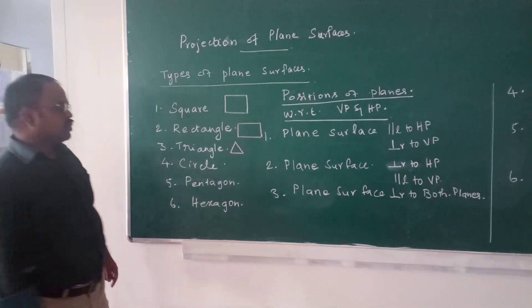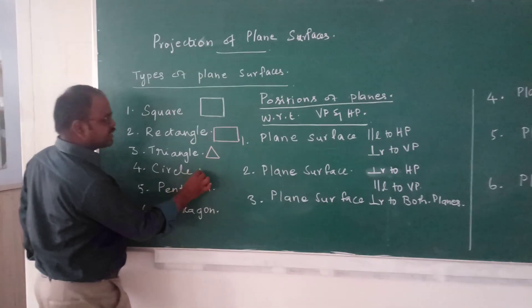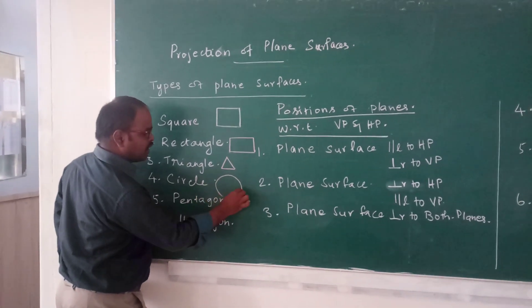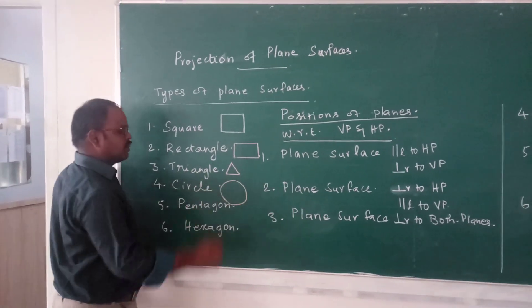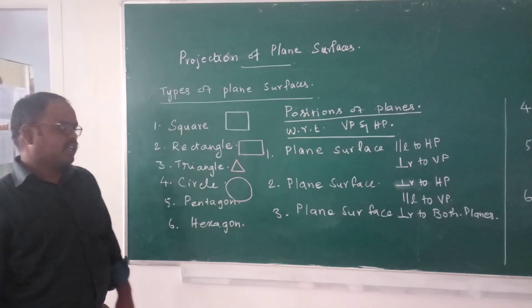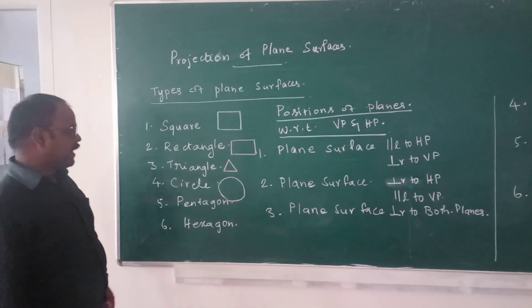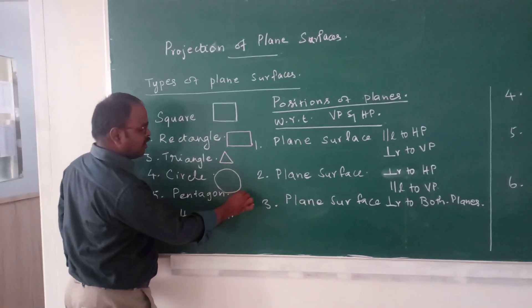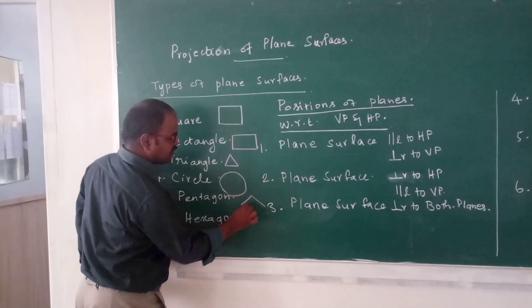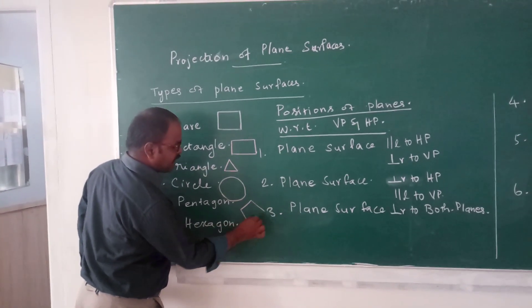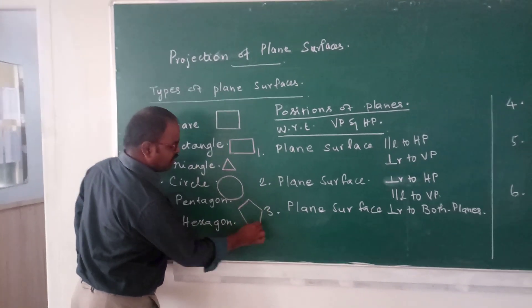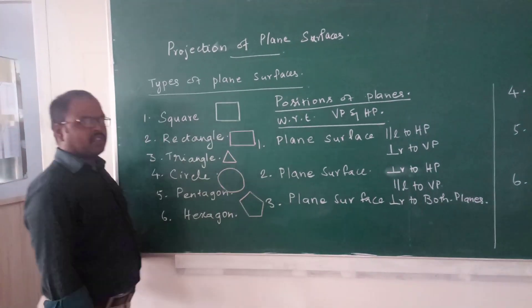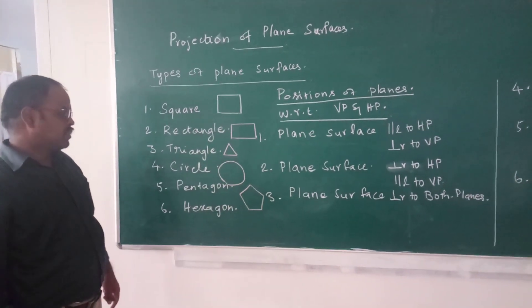Next is circle. Then pentagon — pentagon is having five equal sides.